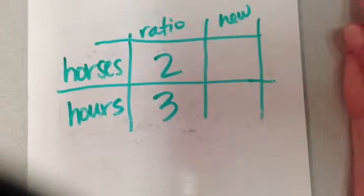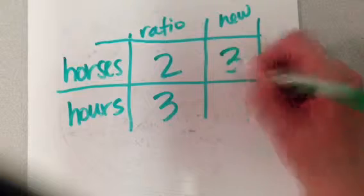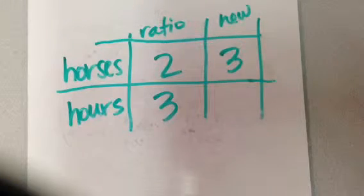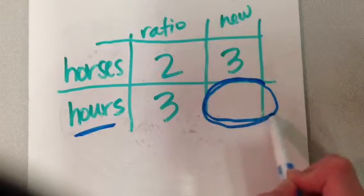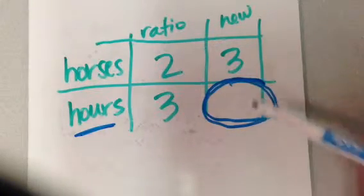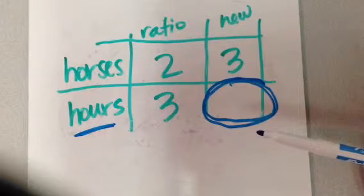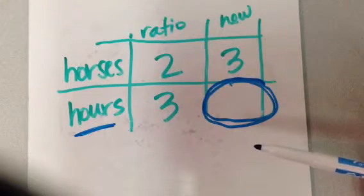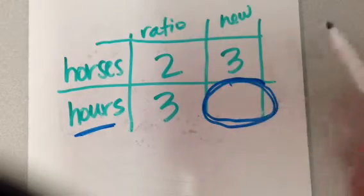My original ratio was 2 horses in 3 hours. And my new amount, right, they want to know how long it should take Gene to shoe 3 horses. And so the question that it asks me is how long. That's a time word, right? So I should have my empty spot down here in the time, the hours area. But in case I don't, that's always kind of a good check for yourself. You know, so how long should it take him? Oh, that's a time question, so this is what I'm looking for.